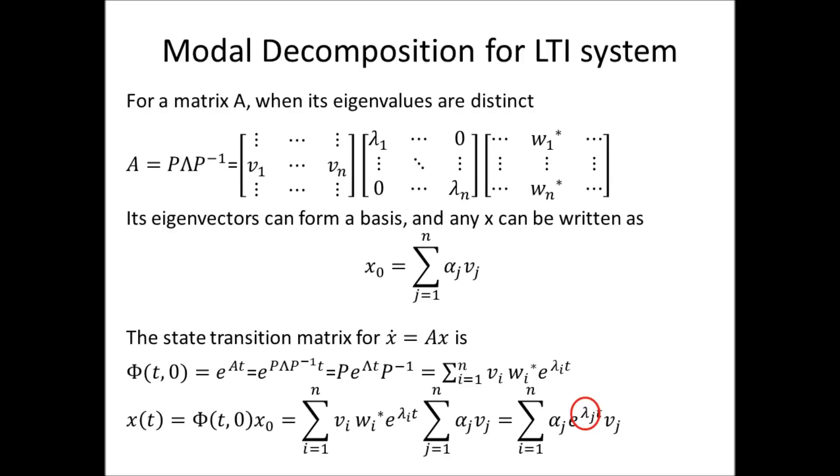It has a million eigenvalues. Since they are all distinct, we can diagonalize A into the form of P lambda P inverse, so that the state transition matrix can be expressed as the sum of Vi times Wi transpose times e to the power lambda i t, where e to the power lambda i t is called the mode of A, and X can be expressed as a linear combination of these modes.